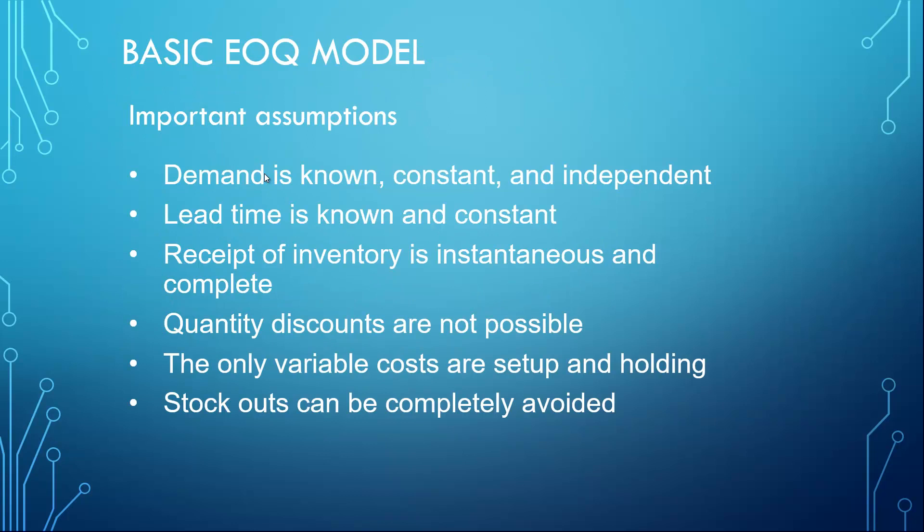In the basic economic order quantity model, we assume the following: demand is known, constant, and independent; lead time is known and constant; receipt of inventory is instantaneous and complete; quantity discounts are not possible; the only variable costs are setup and holding; and stockouts can be completely avoided.